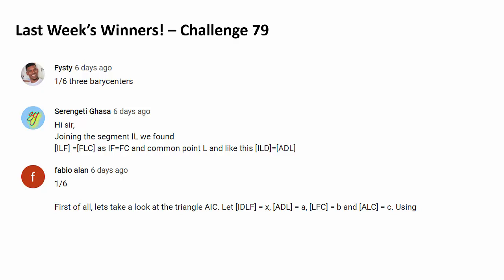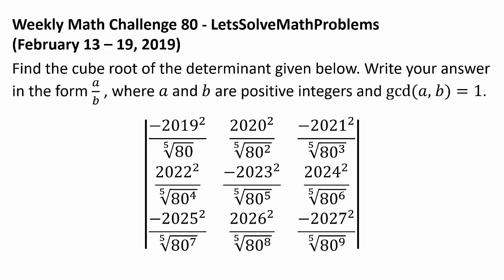Now let's get to this week's challenge. Find the cube root of the determinant given below. Write your answer in the form A over B, where A and B are positive integers and the greatest common divisor of A and B is 1.